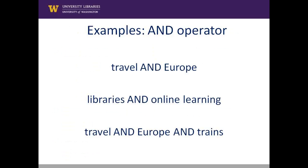The Boolean AND operator links two or more terms to narrow a search. You've probably used this operator before without even realizing it, because oftentimes, such as when searching in Google, it's already implied.